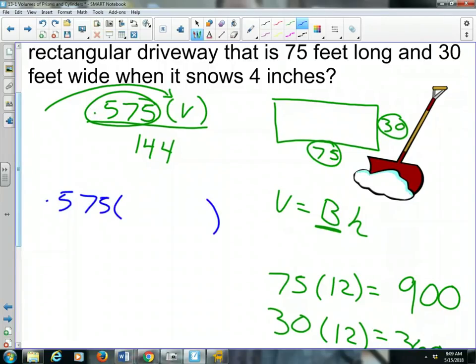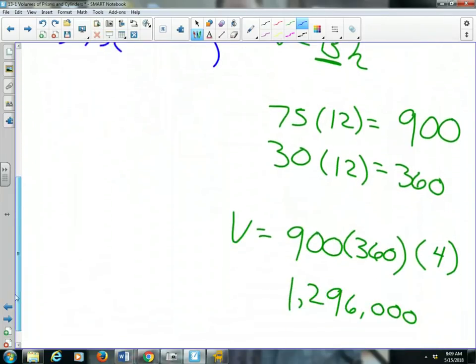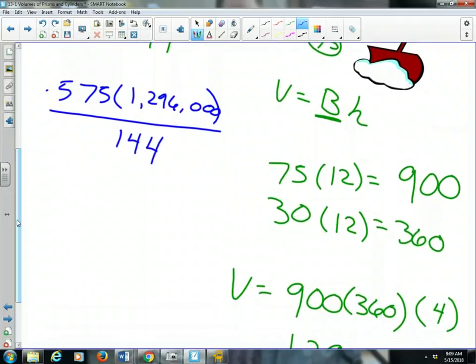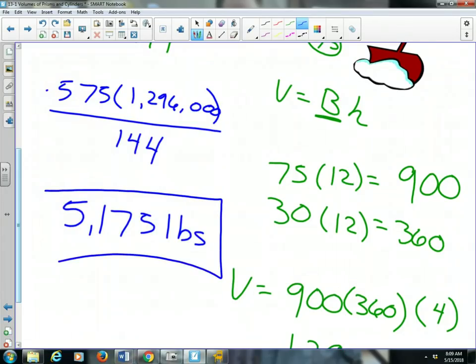0.575 multiplied by the volume, which is, again, 1,296,000, divide that by 144. And how many pounds of wet snow am I going to shovel off my driveway? When you multiply the 1,296,000 times 0.575 equals, divided by 144, there is 5,175 pounds of snow that you're shoveling. That's why I'm so ripped, everybody. Woo! Alright.